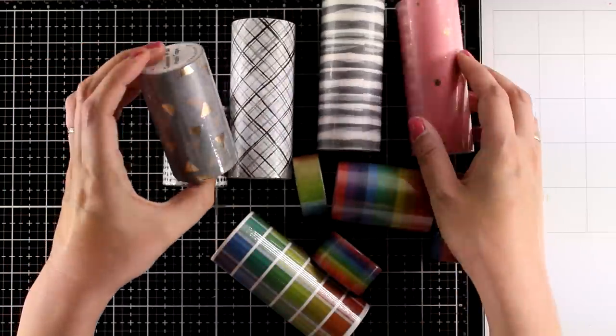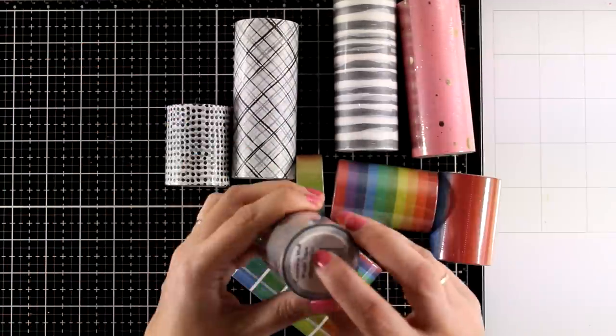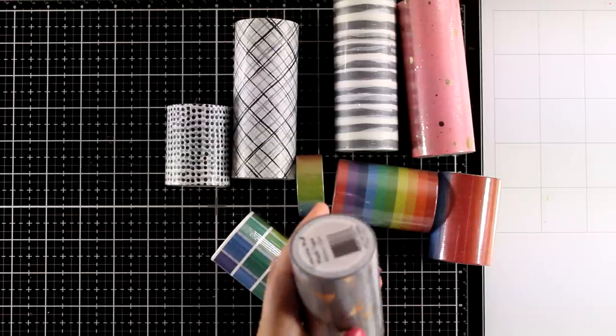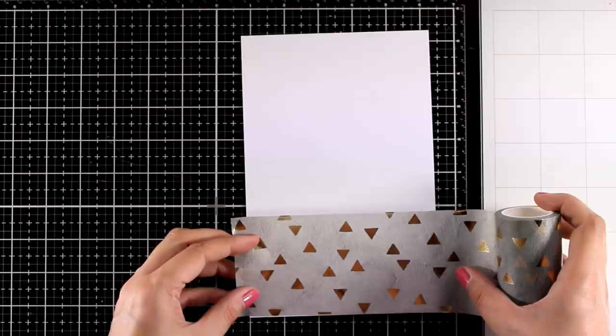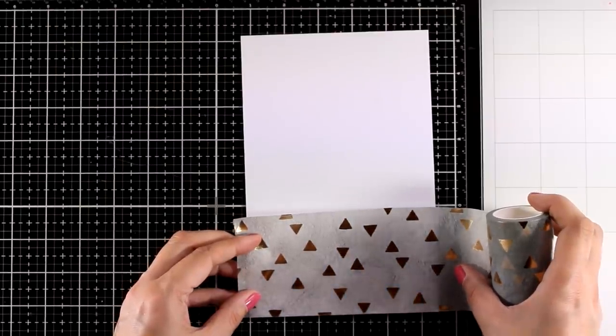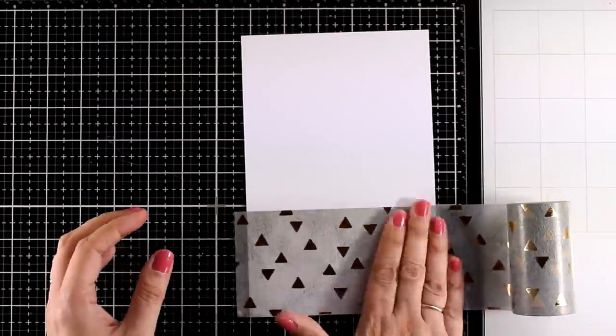Now for today I will work with this one. I absolutely love it because if you take a close-up look, you will see that it looks like concrete with foiled triangles on top. I find that it is really unique and unlike any other washi tape that I have in my stash.